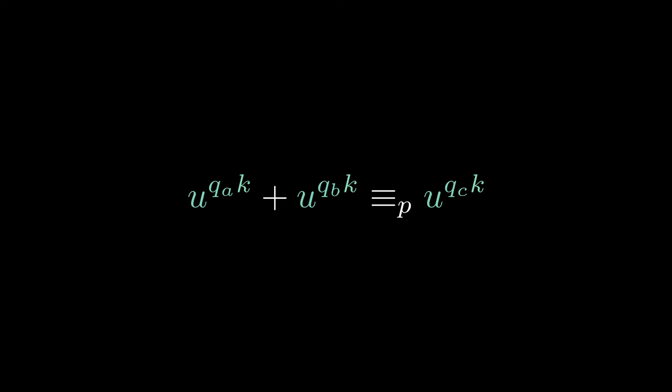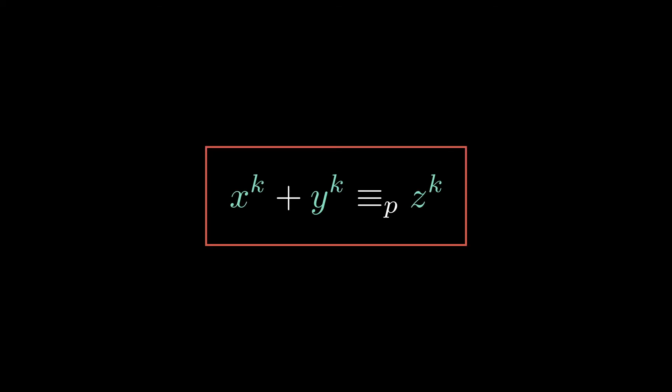You can probably see where this is going. We have three elements here, which are k powers, and if we take the roots along with their quotients and simply relabel them, well, we get x to the k plus y to the k congruent to z to the k modulo P. Fermat has failed, modulo a prime.